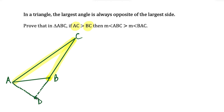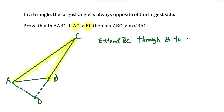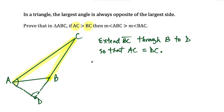I'm going to connect point A to point D. We're going to extend BC through B to point D so that AC is equal in length to side DC. The result of this is we now have an isosceles triangle, and we could say that this angle here is equal in measure to this angle here.